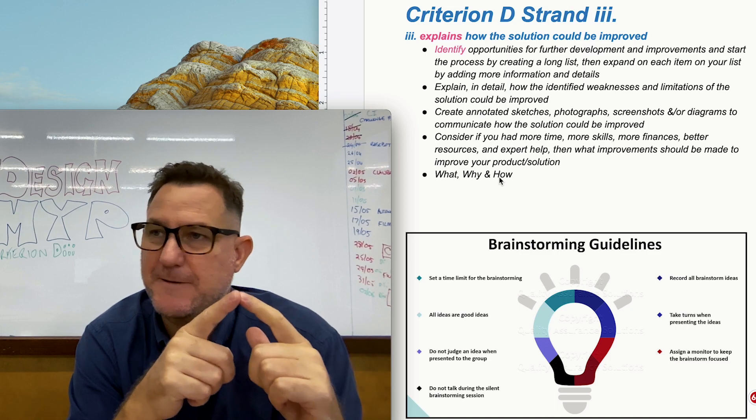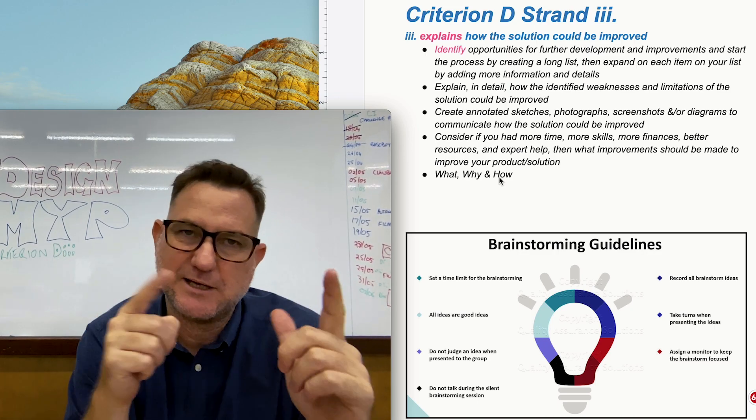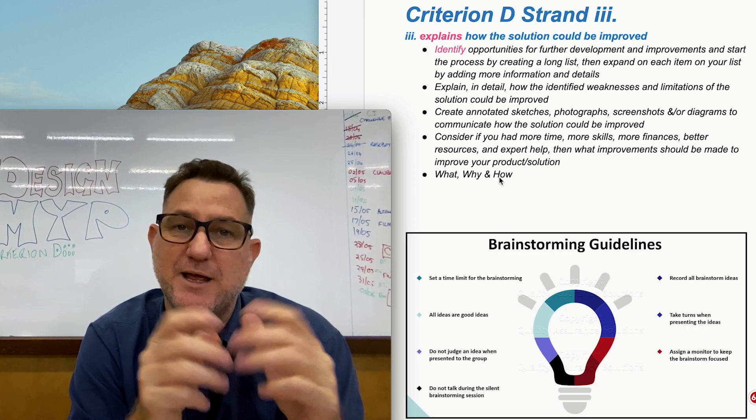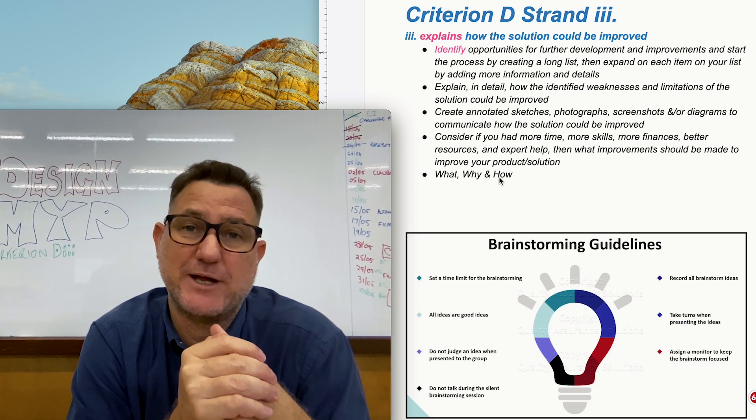So look at the first design specification, look at your product and think okay how could I better met that design specification then move on to the next one. So that's probably the easiest way to do, you can even copy and paste your design specification list stick it in,